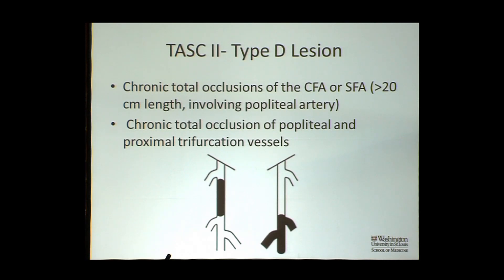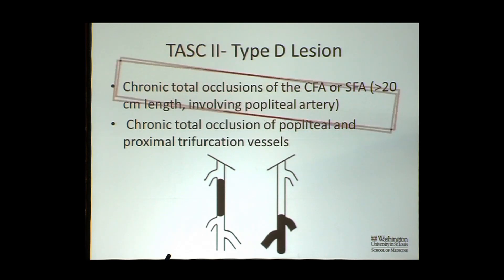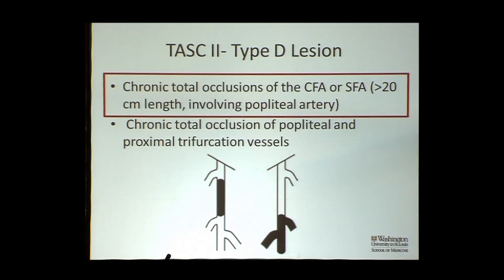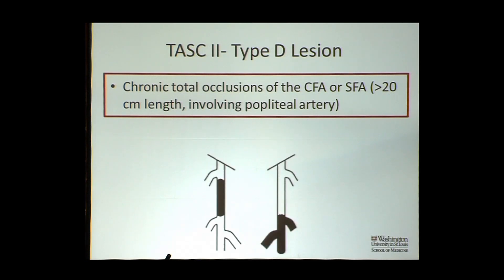For TAS-D type lesions — if you read the TAS-D document, they lump two considerations under one heading, which is somewhat confusing. Today we're really just going to be talking about chronic total occlusions of the common femoral or SFA. I don't touch chronic total occlusions of the common femoral artery. This is one of those wordings in TAS-2 where you wonder how it got there. So really this is SFA greater than 20 centimeters that may or may not involve the proximal popliteal artery.